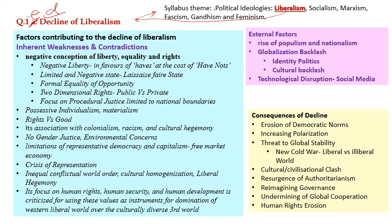Francis Fukuyama called this the 'end of history' — meaning liberal democracy and free market economy had won; this was the elixir of socio-economic arrangement. For a time it seemed the US championed liberalism, neo-liberal globalization occurred, and even Russia and China adopted capitalism. But liberalism has since faced enormous challenges and appears to be declining. The inherent weaknesses and contradictions include: a negative conception of liberty, meaning the state does nothing and allows everyone to do what they wish — which only benefits the haves.